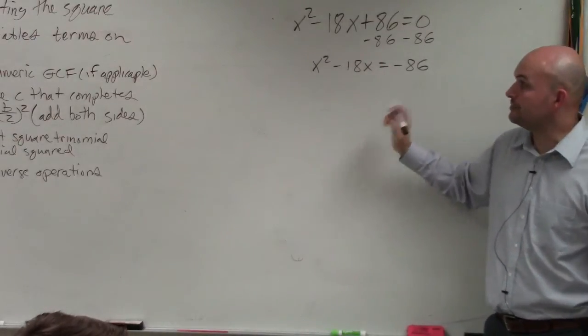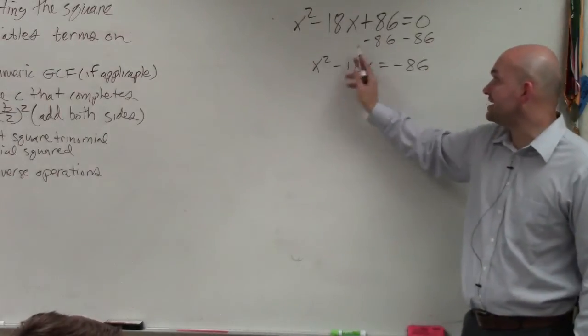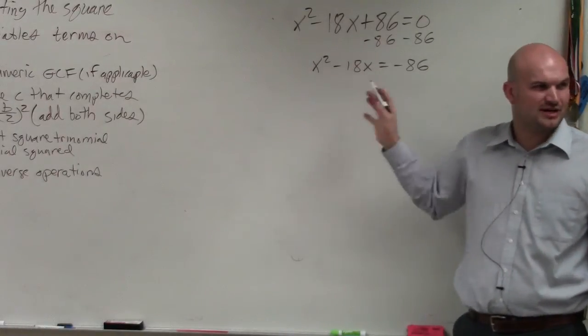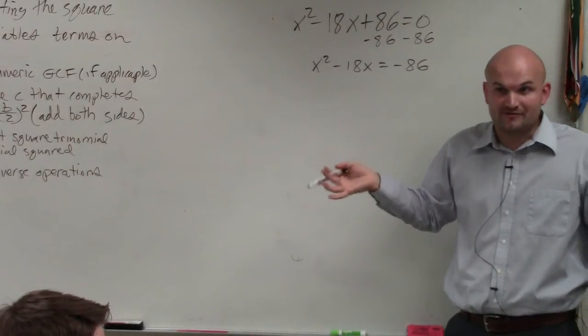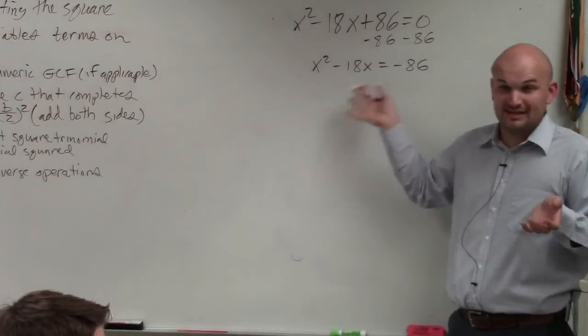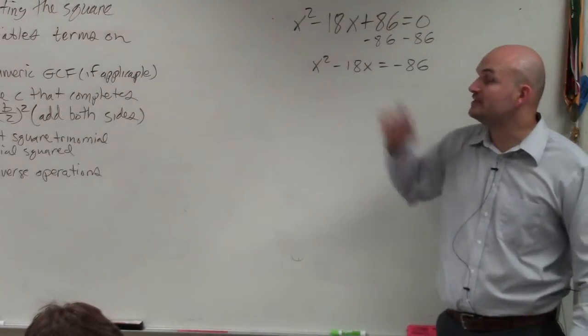Now, the next thing I need to do is factor out a numeric GCF. Does x squared and negative 18x have any numbers that are in common? They have an x, right? But that's a variable GCF. I'm looking for a number. They don't have anything in common. So I can't factor anything out. So I move to step number three.